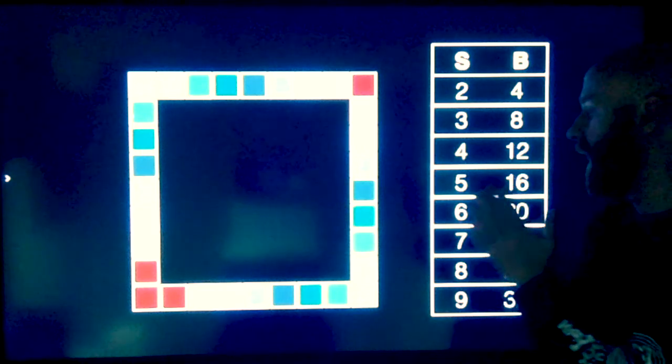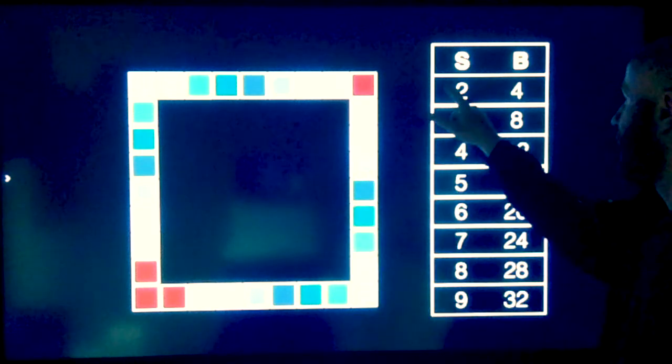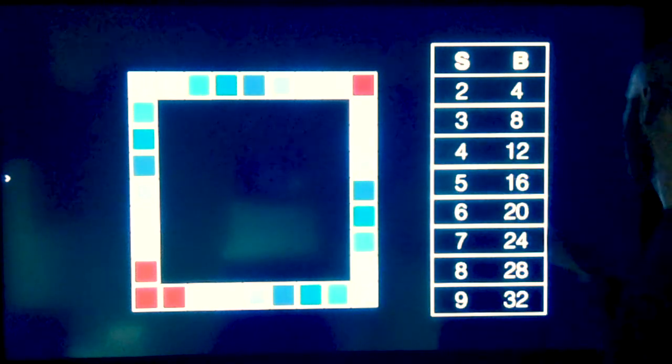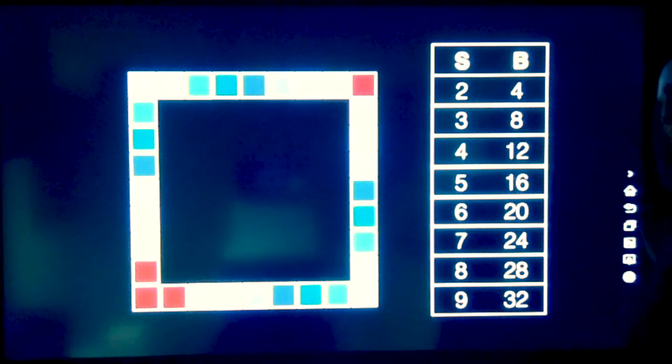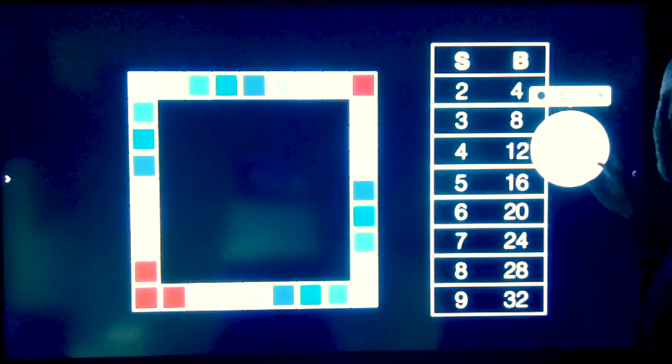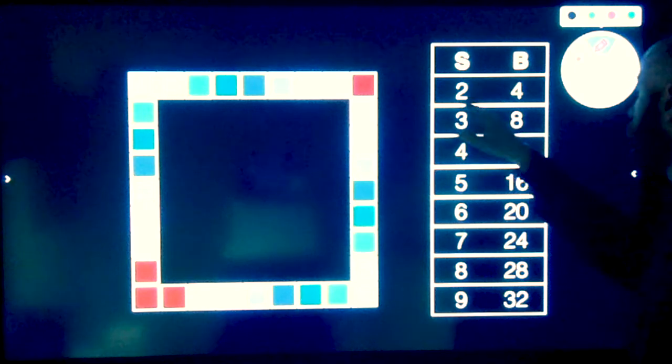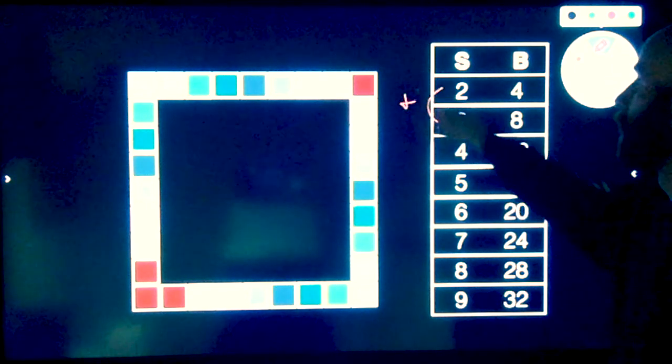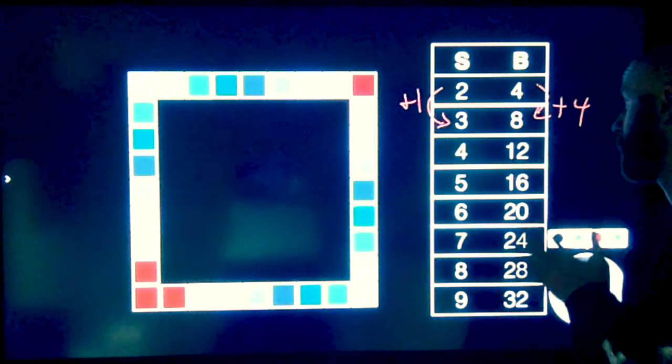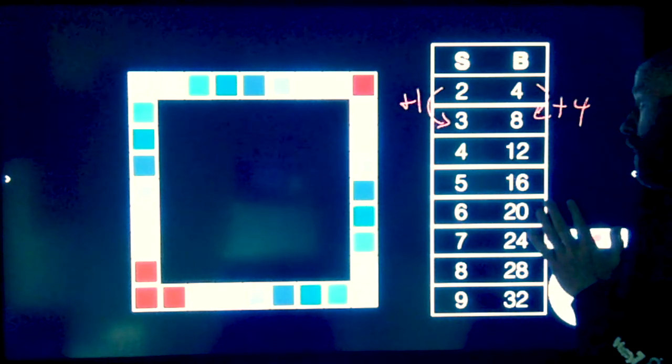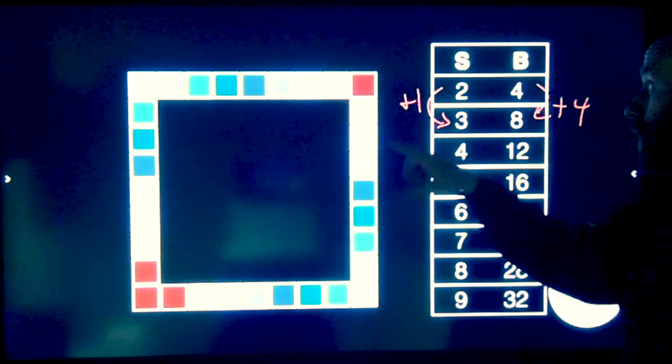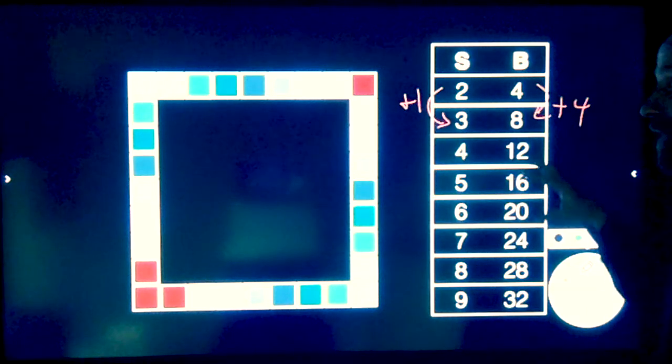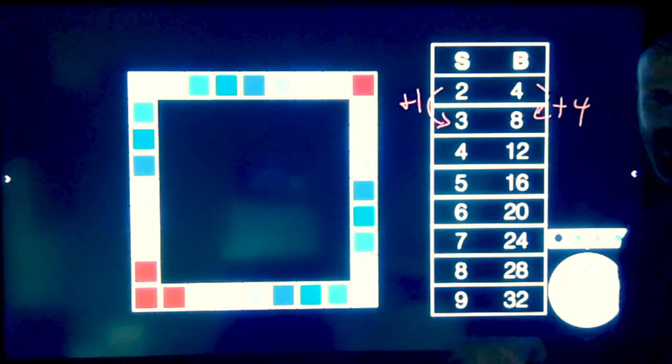All right, so we saw in that animation, as we increased the side length by one each time, we would have to add four squares to complete the border. So increasing the side length by one increases the border by four squares.